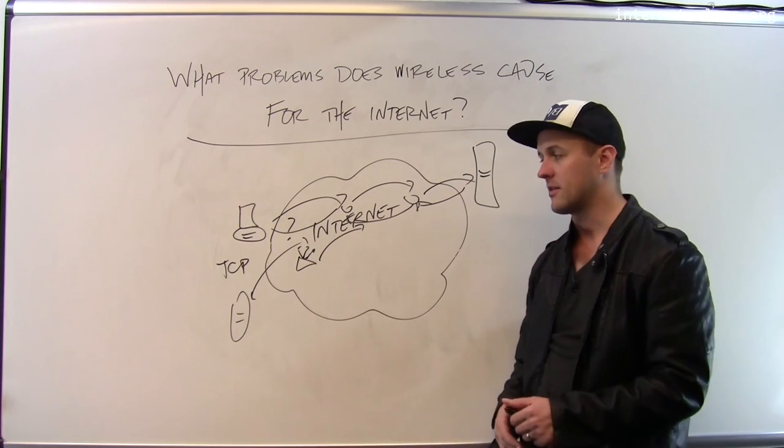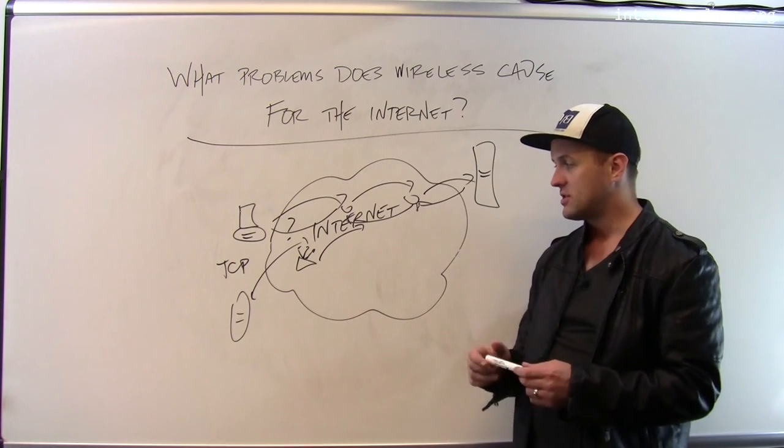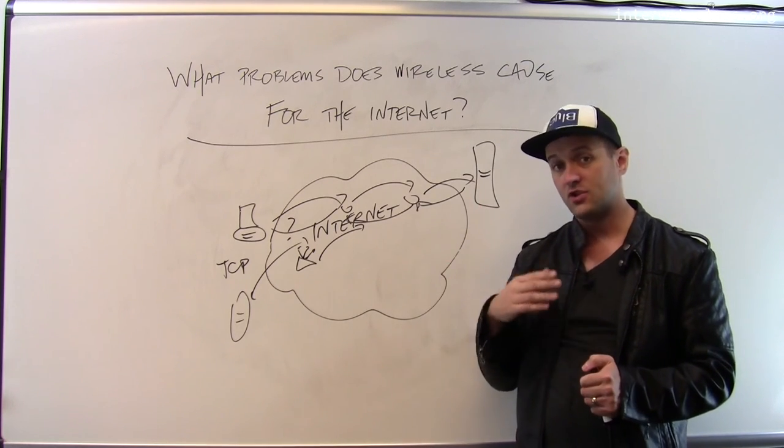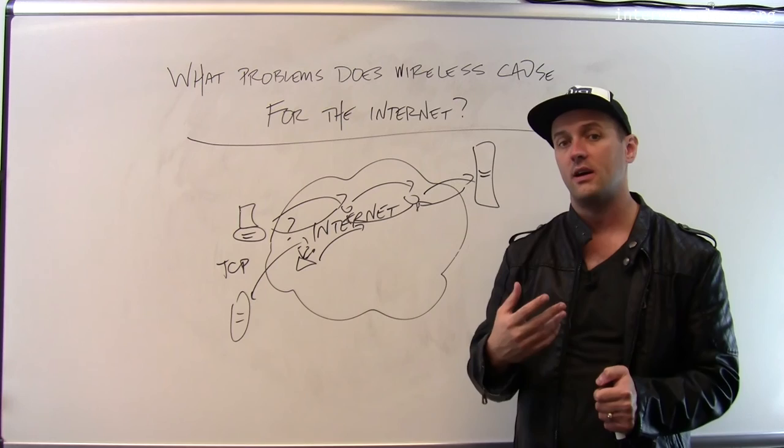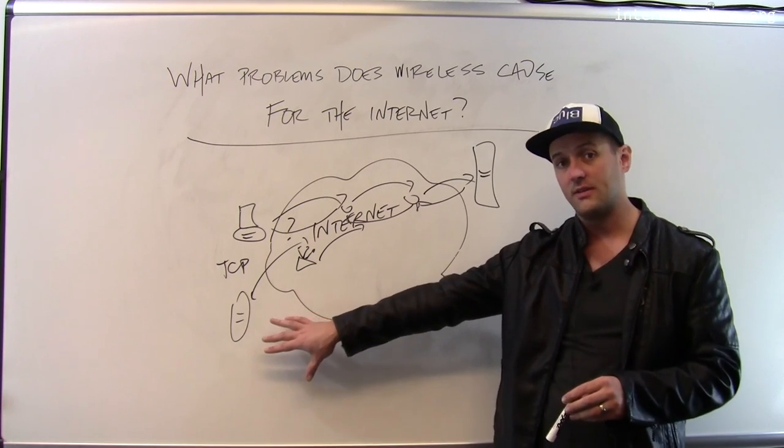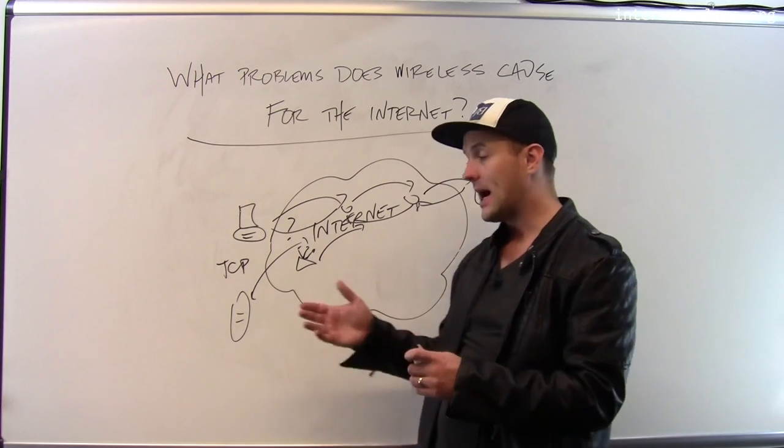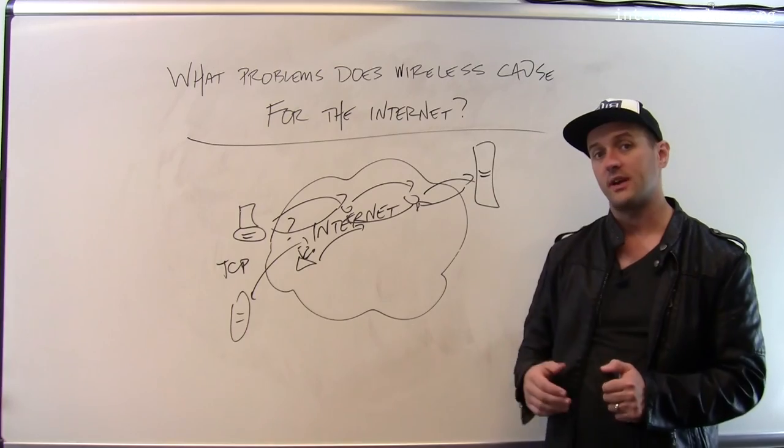So this is one of the ways that the wireless transmissions sort of have challenged some of the design of Internet protocols. And this is one of the reasons we're starting to see new protocol development at the edge of the network in order to try to accommodate the growing number of wireless devices.